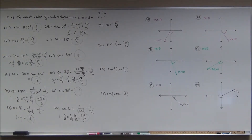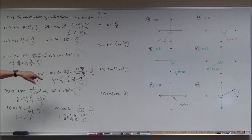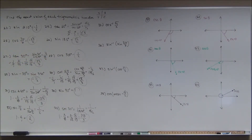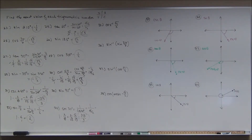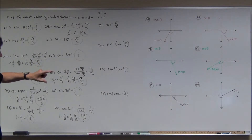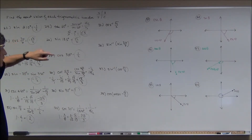You should be able to get all of these from the unit circle and knowing the relationships for tangent, cotangent, secant, and cosecant. Be careful with your signs, your fractions, and your radicals. The next problems are a little trickier — try them first before watching further.